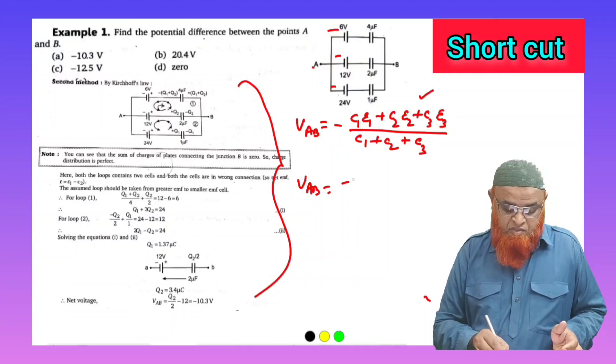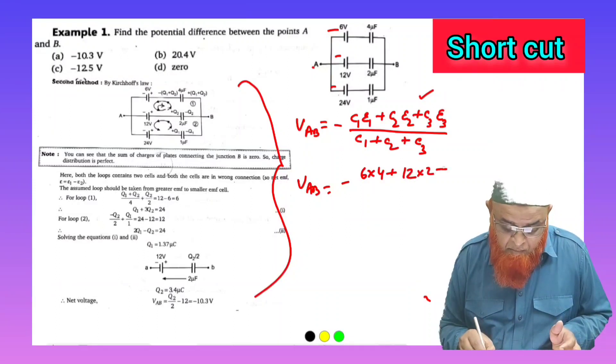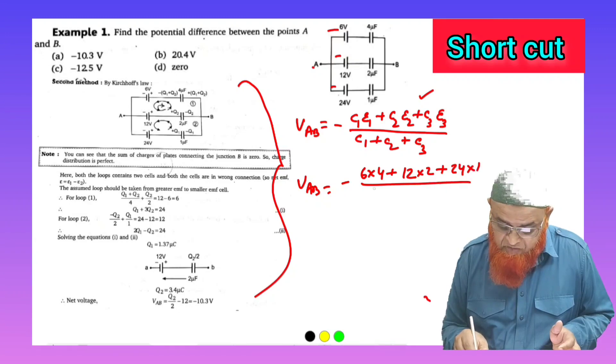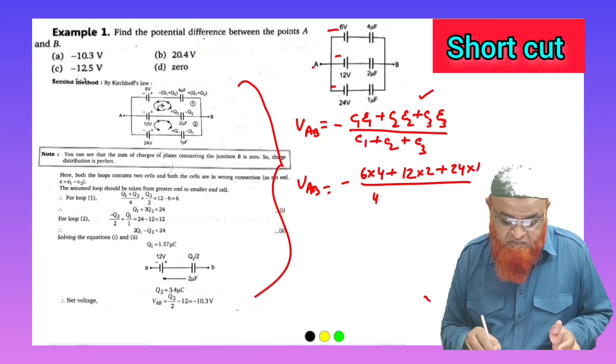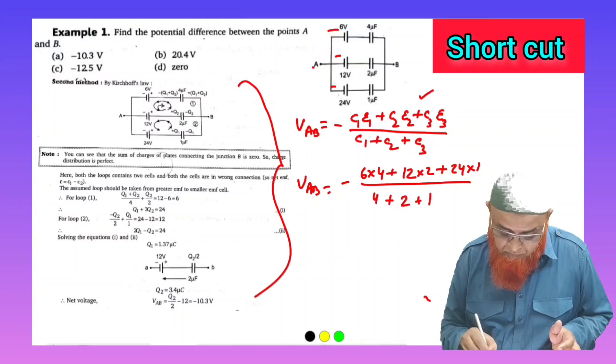If you directly substitute the values, you will be getting the answer directly. Minus: c1·e1 means 6 into 4, plus 12 into 2, plus 24 into 1, by c1 + c2 + c3, that is 4 + 2 + 1.